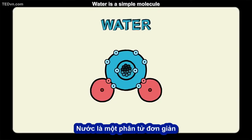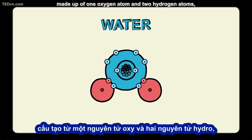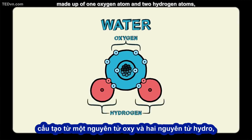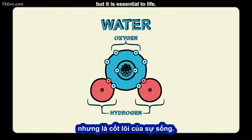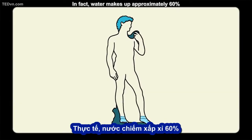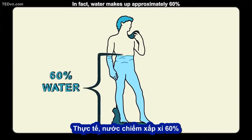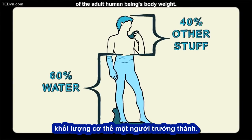Water is a simple molecule made up of one oxygen atom and two hydrogen atoms, but it is essential to life. In fact, water makes up approximately 60% of the adult human being's body weight.